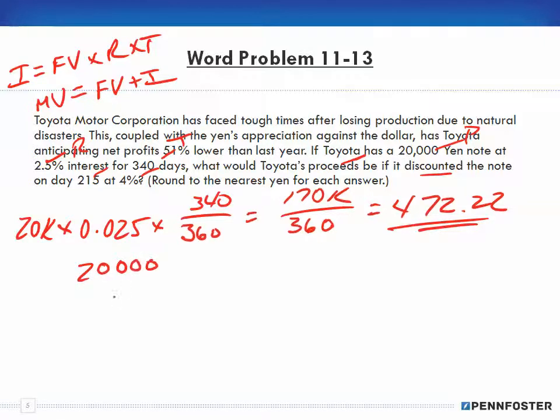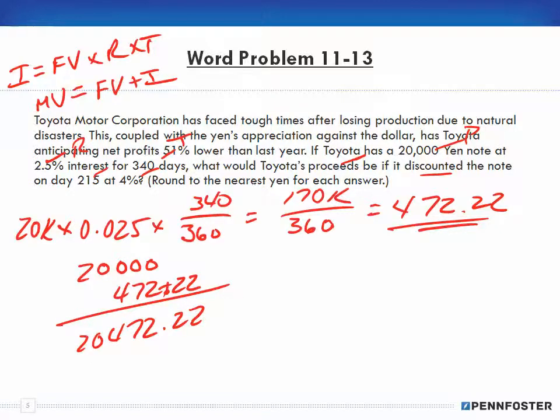We take our 20,000 and add our 472.22, so we get 20,472.22 as our maturity value. We're going to round to the nearest yen for each answer, so we end up with 20,472.